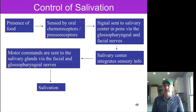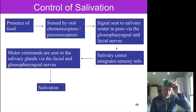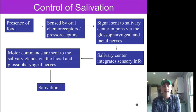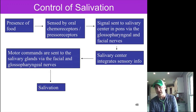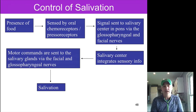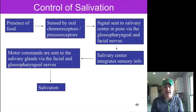Saliva release is controlled through the autonomic nervous system — we do not have conscious control over it. Pavlov's conditioned response (ringing a bell to make a dog salivate) could be replicated in humans. The presence or smell of food triggers chemoreceptors and pressure receptors to send messages via the glossopharyngeal nerves to the salivary center in the brainstem, which sends motor commands to the contractile cells of the salivary glands to squeeze and release saliva. Next time we'll start talking about the throat regions, swallowing, and making our way down to the stomach.